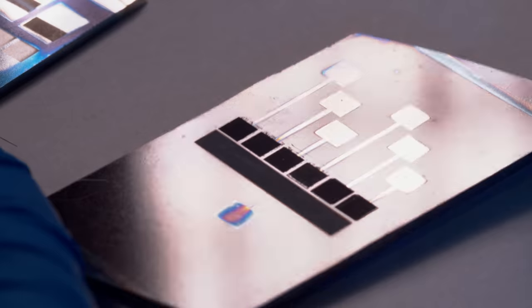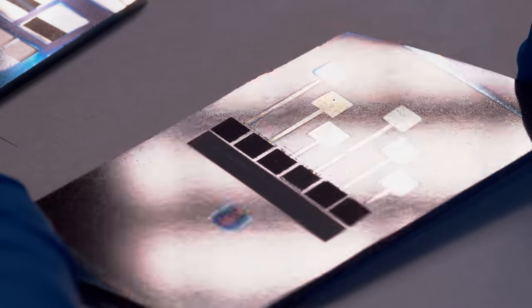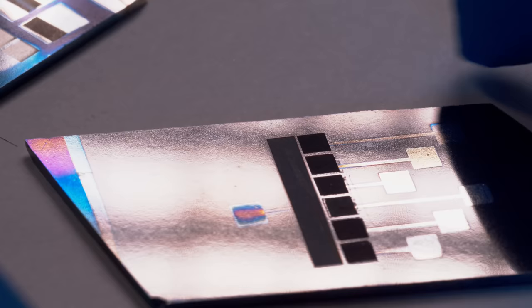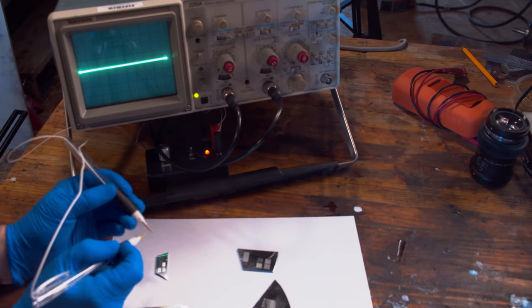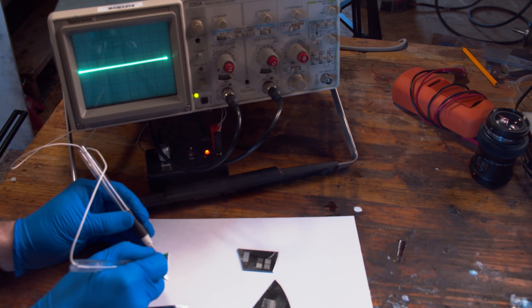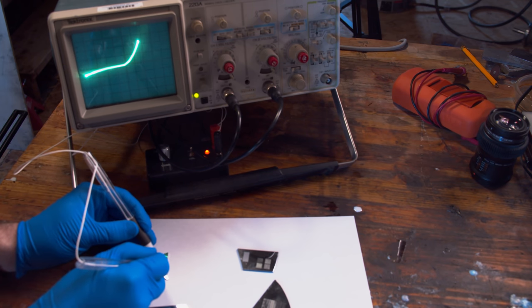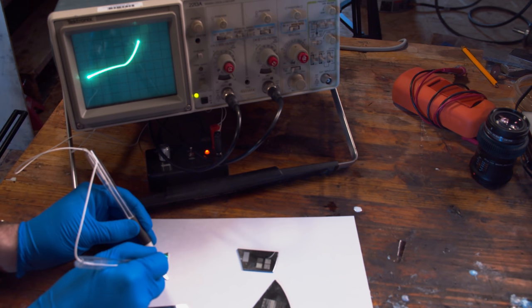I've been trying to do a p-n junction, the simplest device you can form. You take a p-doped region next to an n-doped region and that should give you a diode behavior which you can verify on a curve tracer. I've had mixed results. My very first test I got all excited about, I probed it with the curve tracer and I saw what I thought was a diode, but in retrospect I'm pretty sure that was just Schottky behavior between the probe tips and the semiconductor, not actually between the junctions.